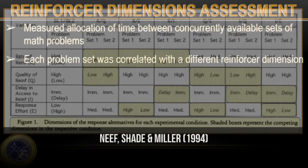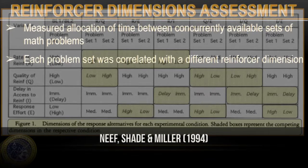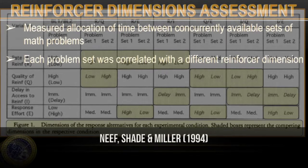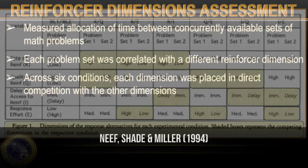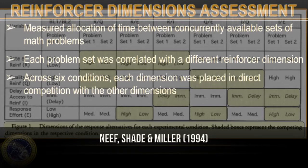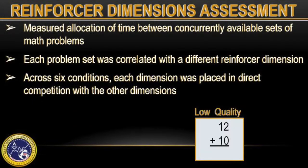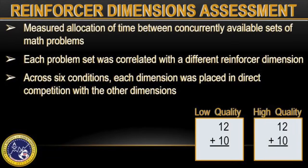For example, one choice was working for reinforcers delivered now or reinforcers delivered later after a 24-hour delay. Across six conditions, each dimension was placed in direct competition with the other dimensions — for example, low quality reinforcers delivered immediately versus high quality reinforcers delivered following a 24-hour delay.